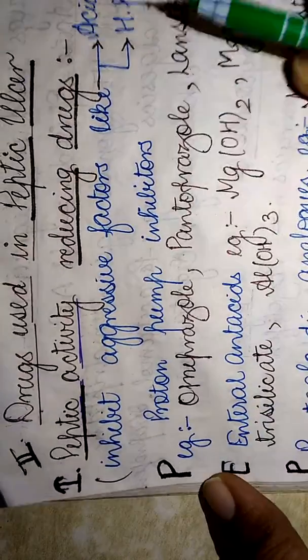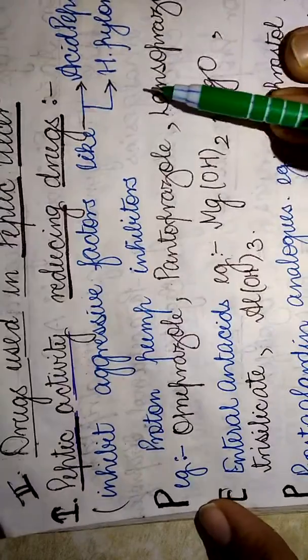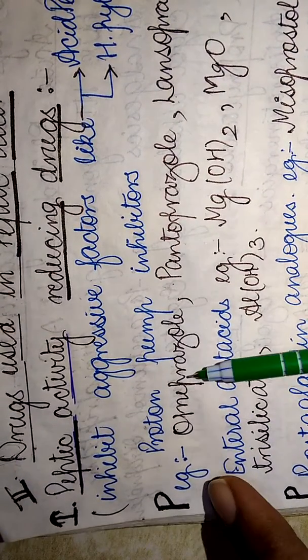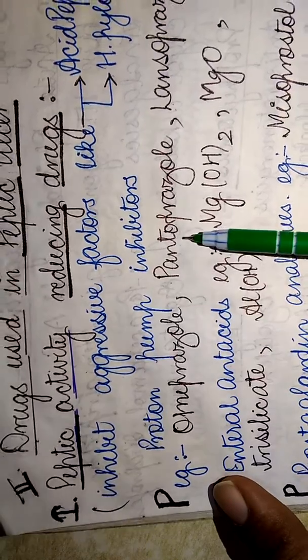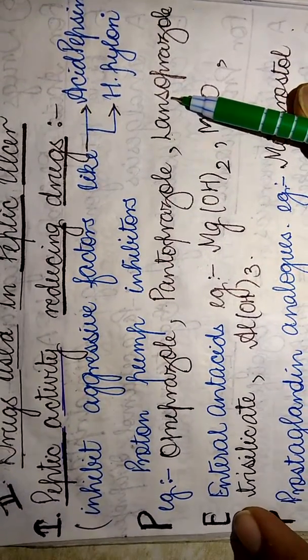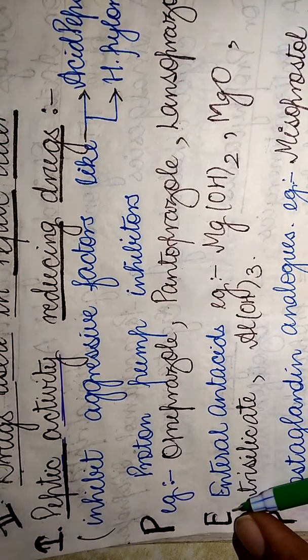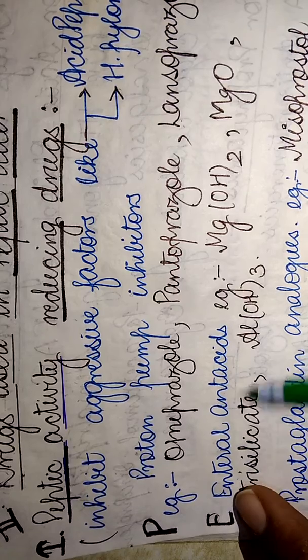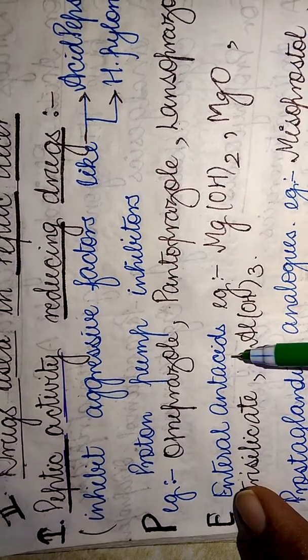The first drug used in the treatment of peptic ulcer are the proton pump inhibitors. Examples include omeprazole, pantoprazole, and lansoprazole. E for PEPTIC will be used to memorize the enteral acid drugs.